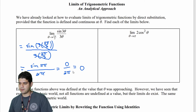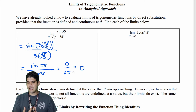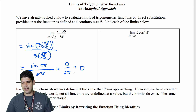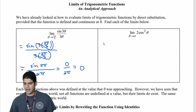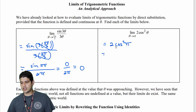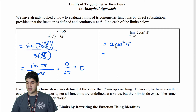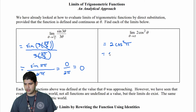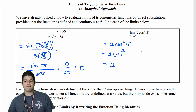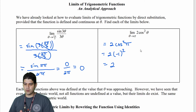Let's look at the second problem: the limit as theta approaches π of 2cos²(θ). Making the direct substitution, we get 2cos²(π). Cosine of π is −1, so I have 2 times (−1)², which is 2 times 1, giving us 2. Great — direct substitution seems to be working most of the time.